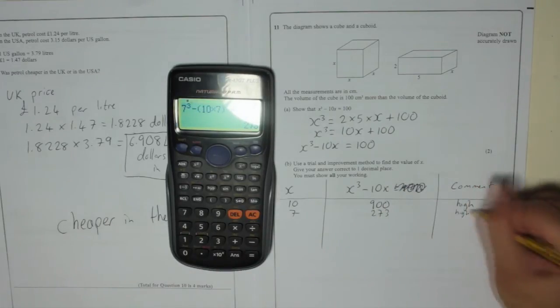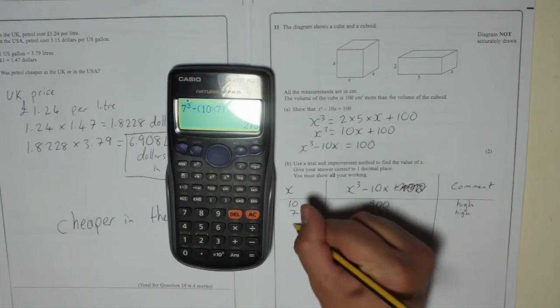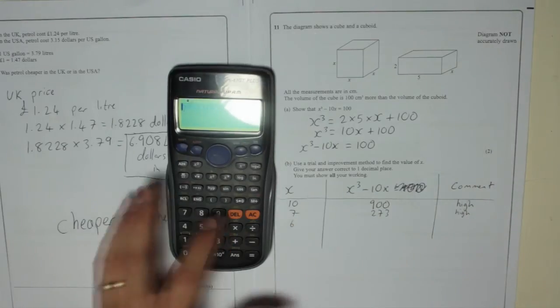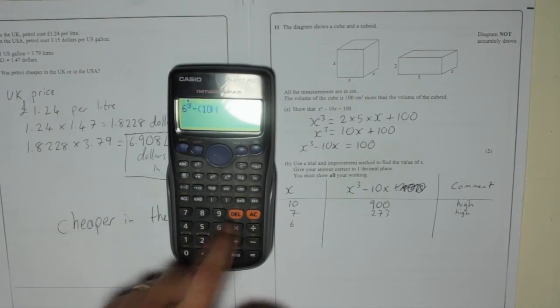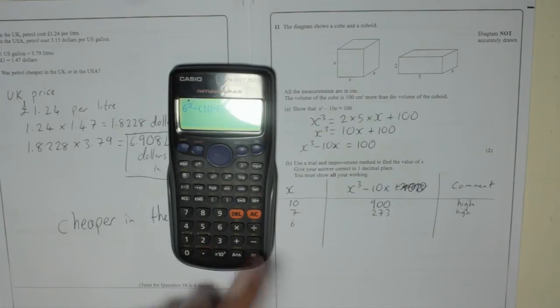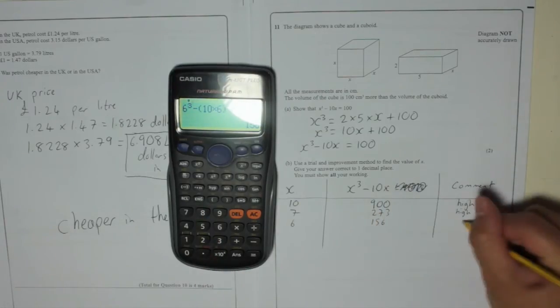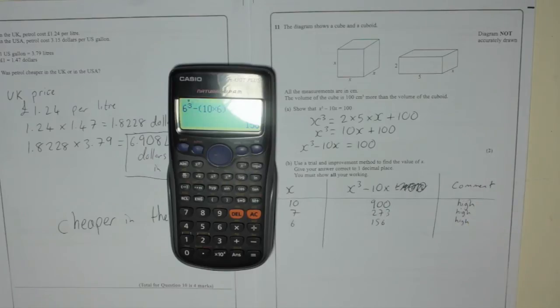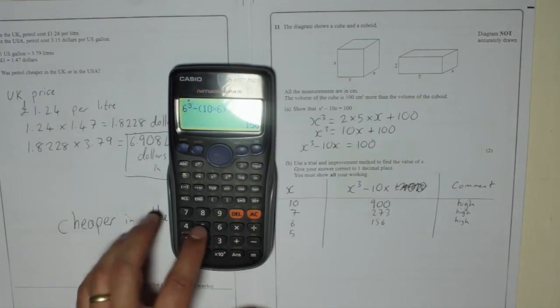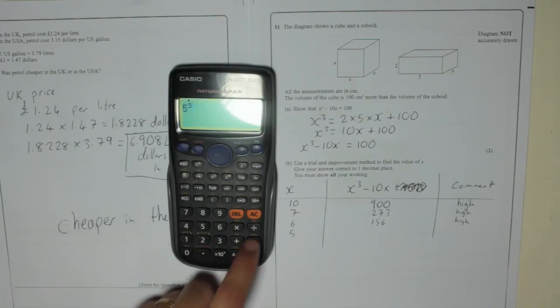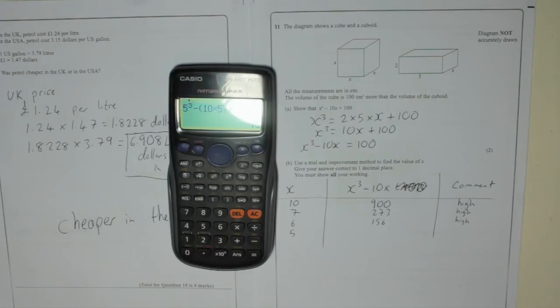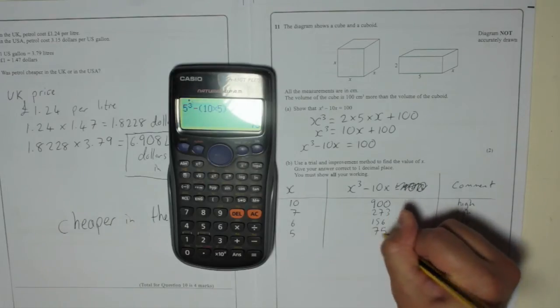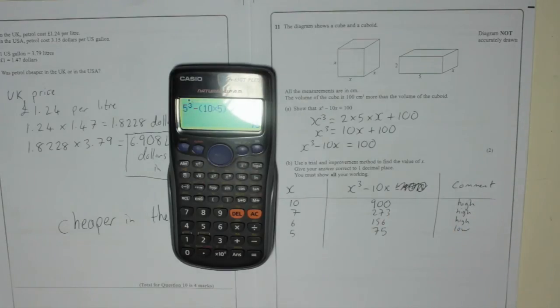Too high still. So now I'll try 6. 6 cubed minus 10 times 6. 156. High. Now I'll try 5. 5 cubed minus 10 times 5 is 75. Which is too low. So we know now that our answer is somewhere in between 5 and 6.